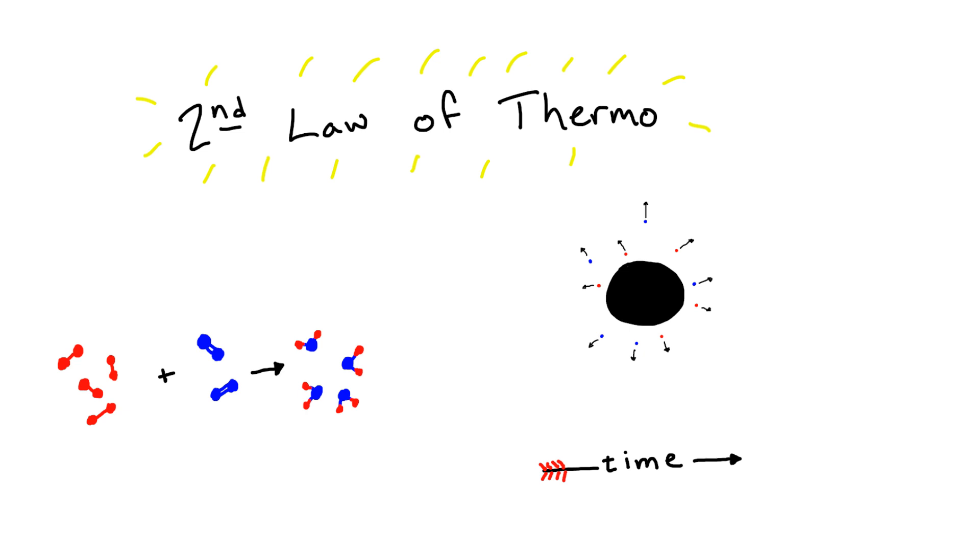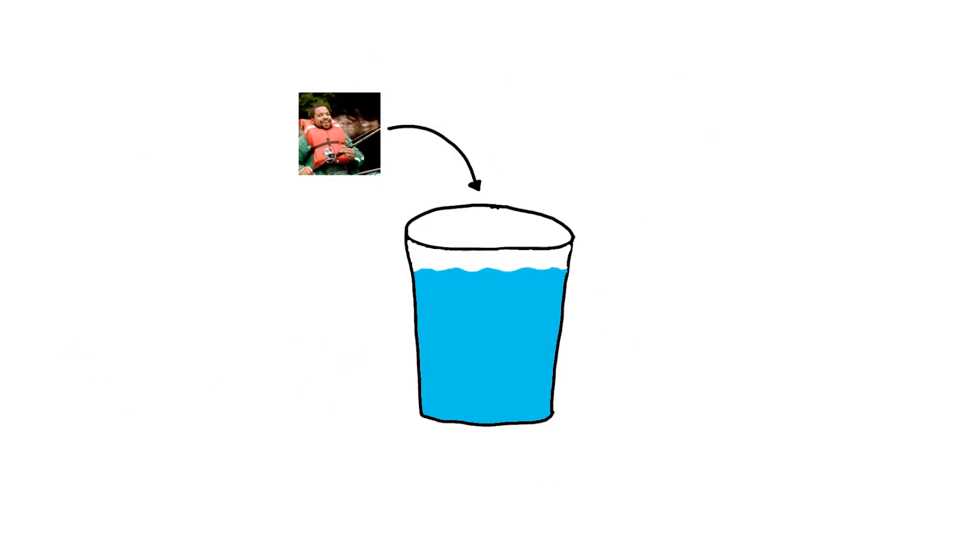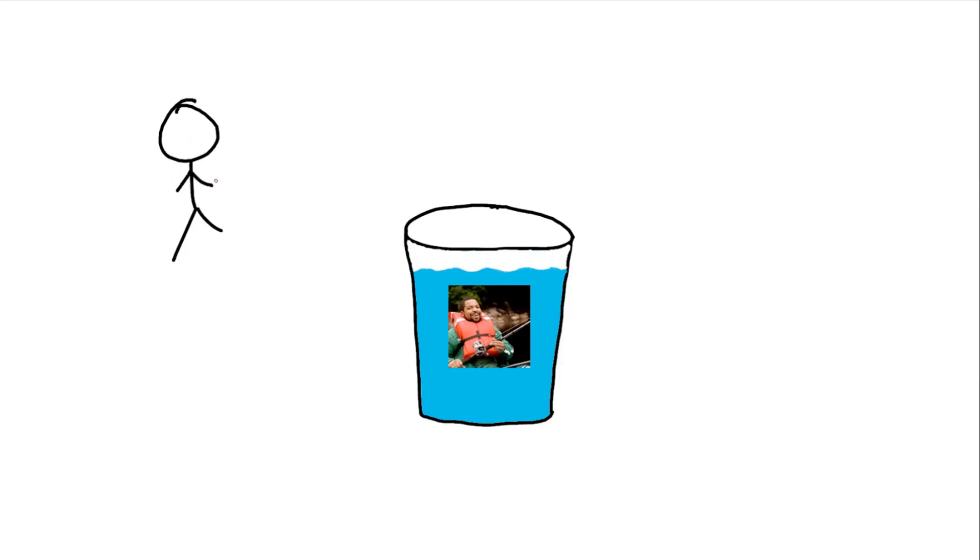What is the second law? Put simply, it states that the entropy of a closed system never decreases. As an example, when you put an ice cube in water, the water cools down and the ice cube heats up and never the other way around.